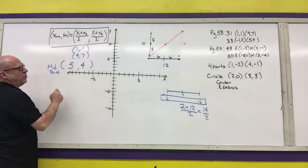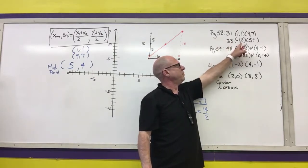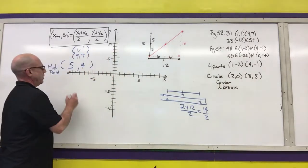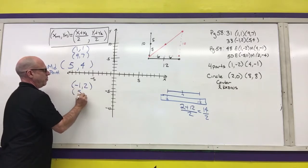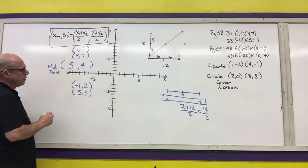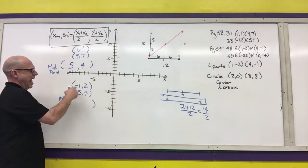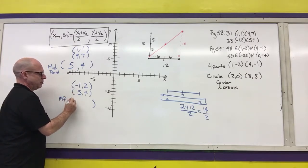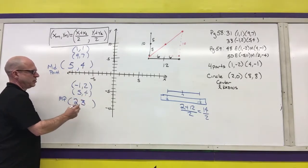Another example is problem 33 on page 58. I want to find the midpoint of (-1, 2) and (5, 4). Again, I write down my coordinates: (-1, 2) and (5, 4), and I do the math. My midpoint is: negative 1 plus 5 is 4, divided by 2 is 2. Then 2 plus 4 is 6, and 6 divided by 2 is 3. So the midpoint is (2, 3).